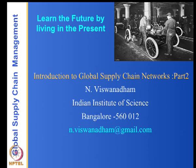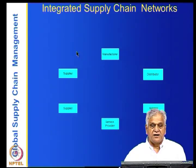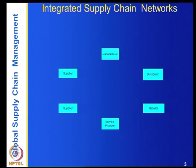We will continue with the introduction of global supply chain networks. To summarize what we did last time: we have a number of players in the supply chain network — suppliers from various countries, manufacturers (either multi-site or single site), distributors, retailers, and several service providers. Service providers could be financial service providers, logistics service providers, or freight forwarders.